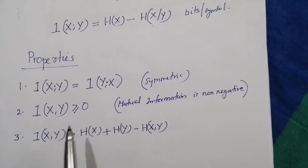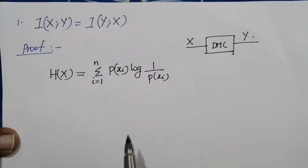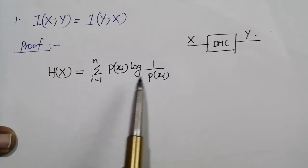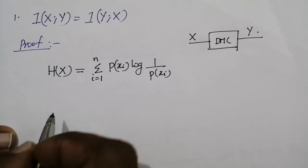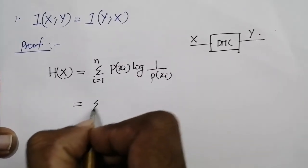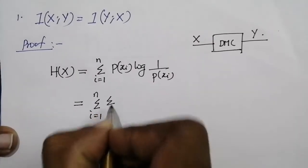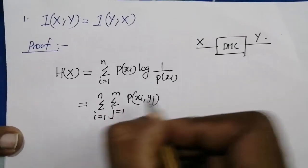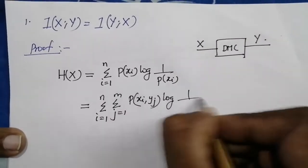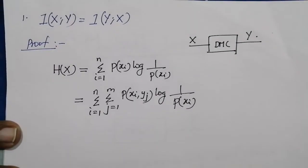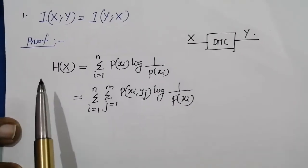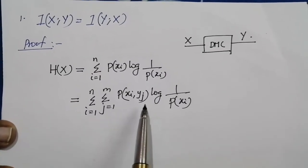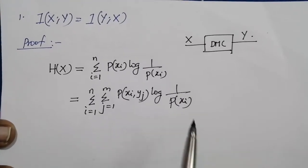Now we will prove each property of mutual information. We know that the entropy of the channel input can be written as the summation over i from 1 to n of p(xi) log(1/p(xi)). From the previous class, we also derived it as the double summation over i from 1 to n and j from 1 to m of p(xi) log(1/p(xi)), i.e., the marginal entropy h(x) is the double summation of joint probability multiplied by the logarithm of 1/p(xi).